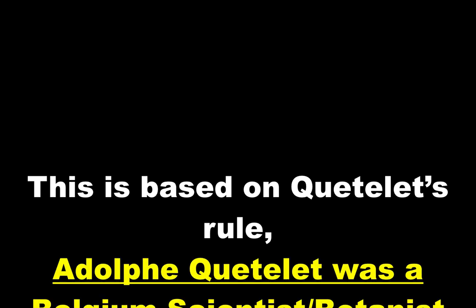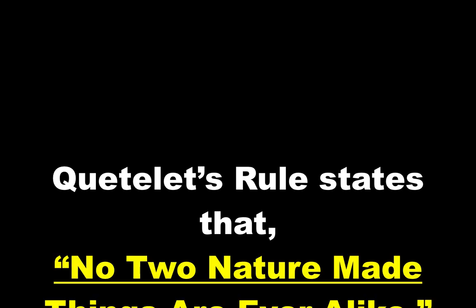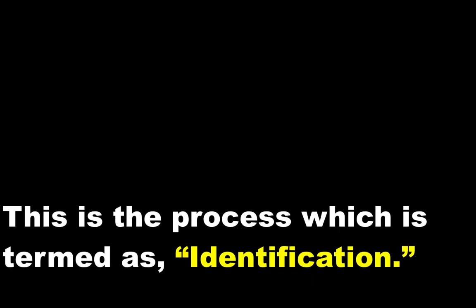This is based upon Quetlet's rule. Adolf Quetlet was a Belgian scientist and botanist, and Quetlet's rule states that no two nature-made things are ever alike. This process by which we establish individuality is called identification.